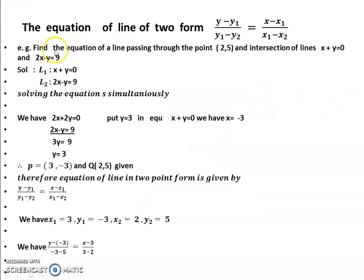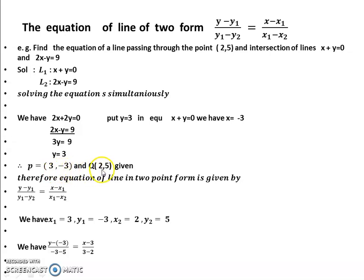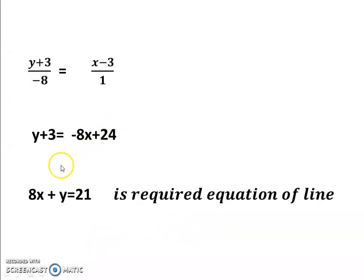To summarize this example: the line passes through (2, 5) and the intersection of x plus y equals 0 and 2x minus y equals 9. We solved simultaneously to get P equals (3, minus 3) and Q equals (2, 5). Applying the two-point form and simplifying, the final answer is 8x plus y equals 21.